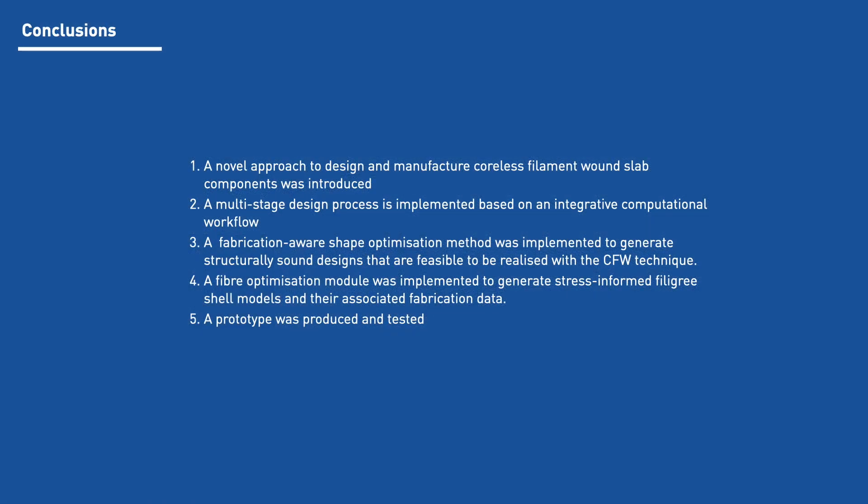The here presented research introduced a novel approach to design and manufacturing of Coley's filament-wound composite structures for slab applications. A multi-stage design process was implemented based on an integrative computational workflow. A fabrication-aware shape optimization method was proposed for the production of performative shell designs and a fiber optimization approach introduced for generating stress-informed filigree shell models under associated fabrication data. These methods were experimentally evaluated by the realization of a filigree shell model component demonstrating the capabilities of this approach to generate performative shell-like designs that can be effectively manufactured using Coley's filament winding.